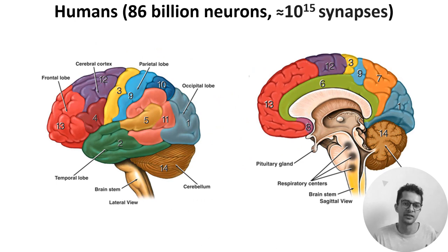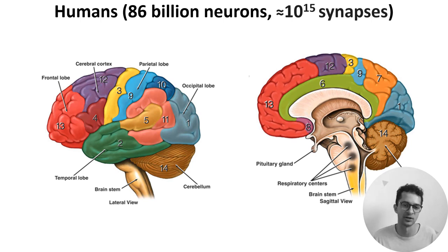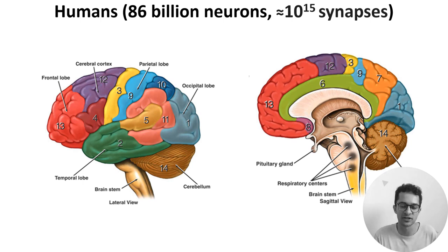Putting it all together, the human brain is thought to be composed of roughly 86 billion neurons, 50 billion glial cells, and 10 to the 15 synapses. At a more macro level, these figures show the growth structure of the brain from a lateral view, as if you're looking at someone from their left-hand side. The diagram on the left shows the brain's outer surface, and there are a few interesting features to note. The outermost layer, known as the cortex, has a folded structure which increases its surface area relative to brain volume.